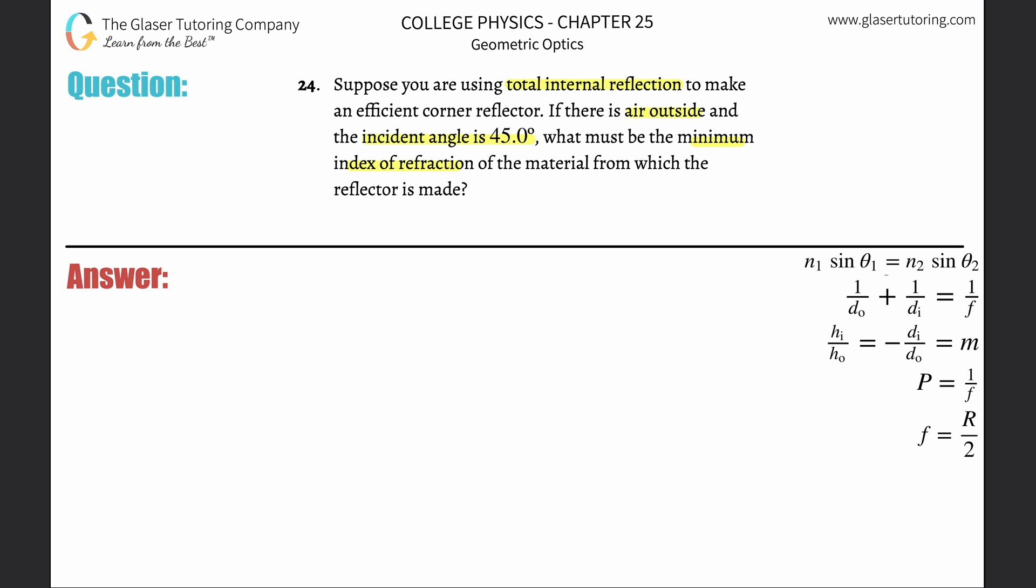I went through how to think through critical angle. Anytime you're seeing total internal reflection, you want to think about critical angle. In other words, total internal reflection occurs when the refracted ray is refracted to 90 degrees. Again, check out number 20.